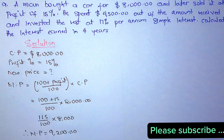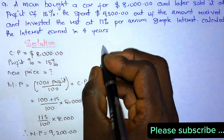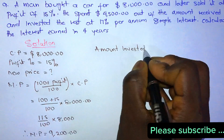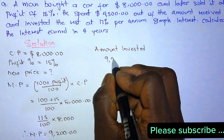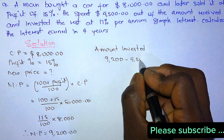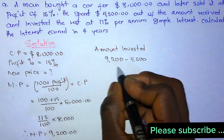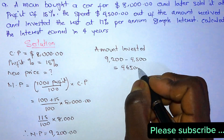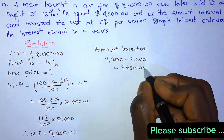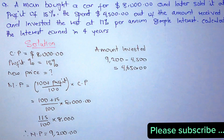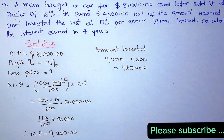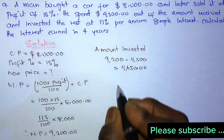Now that we have the new price, he spent four thousand five hundred out of the amount received. So the amount invested is nine thousand two hundred minus four thousand five hundred, which equals four thousand six hundred and fifty dollars. He invested the rest at 17 percent per annum simple interest, so we calculate the interest.